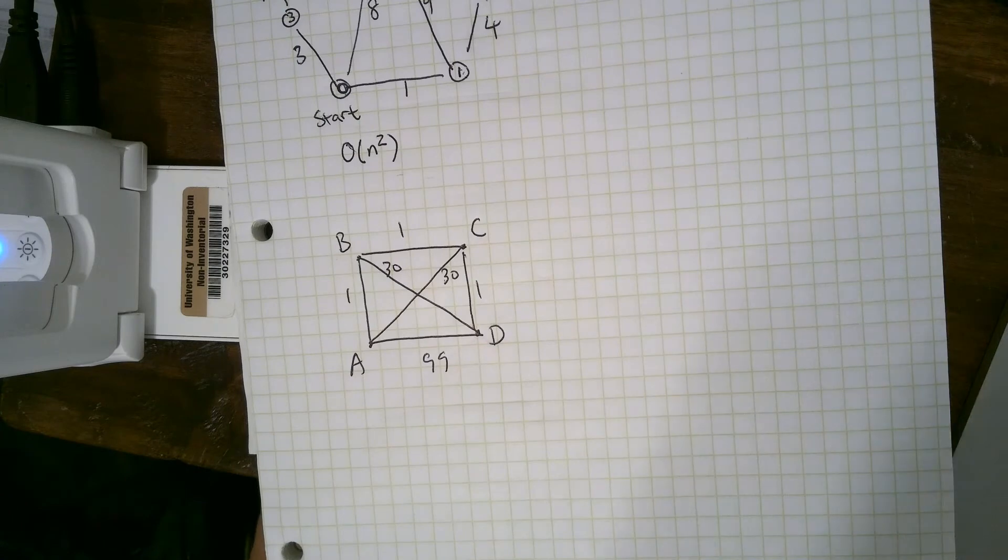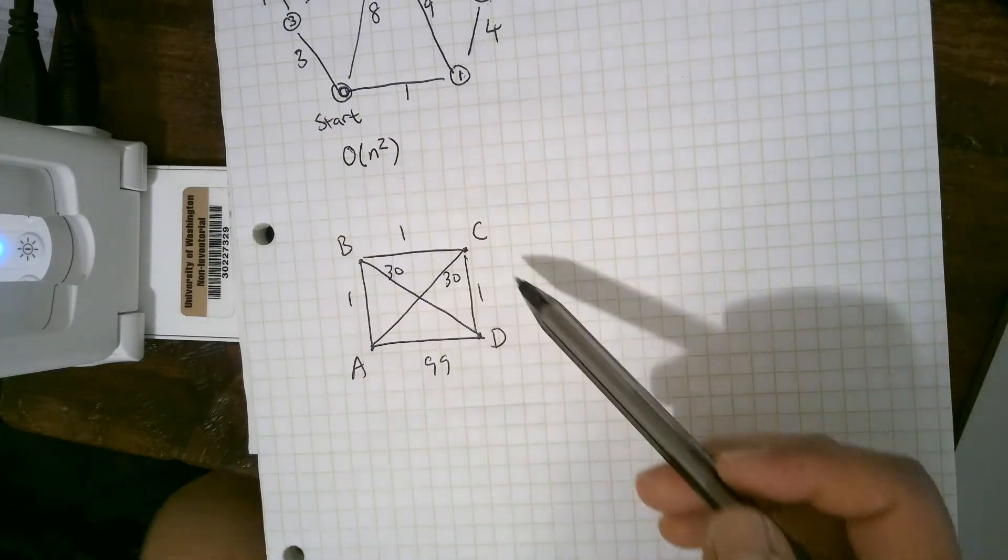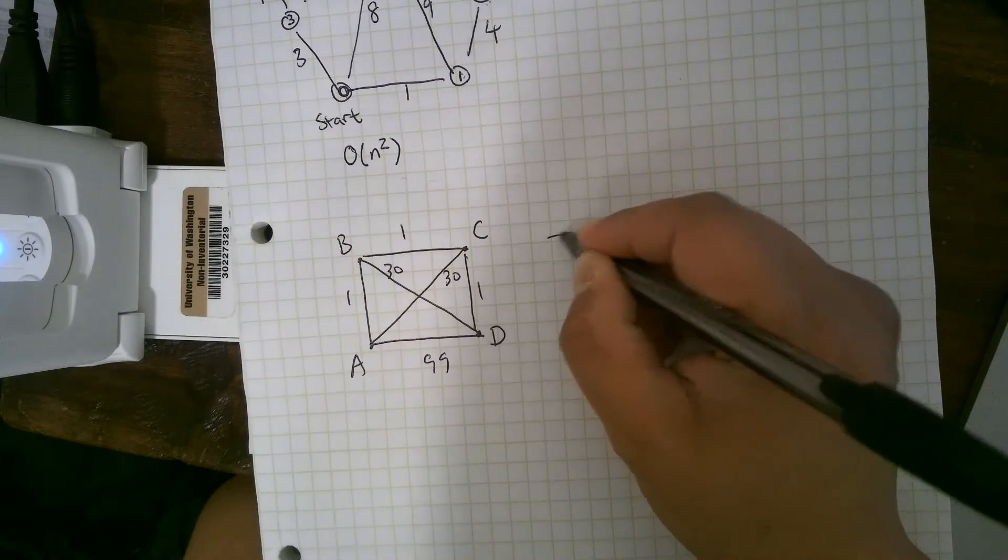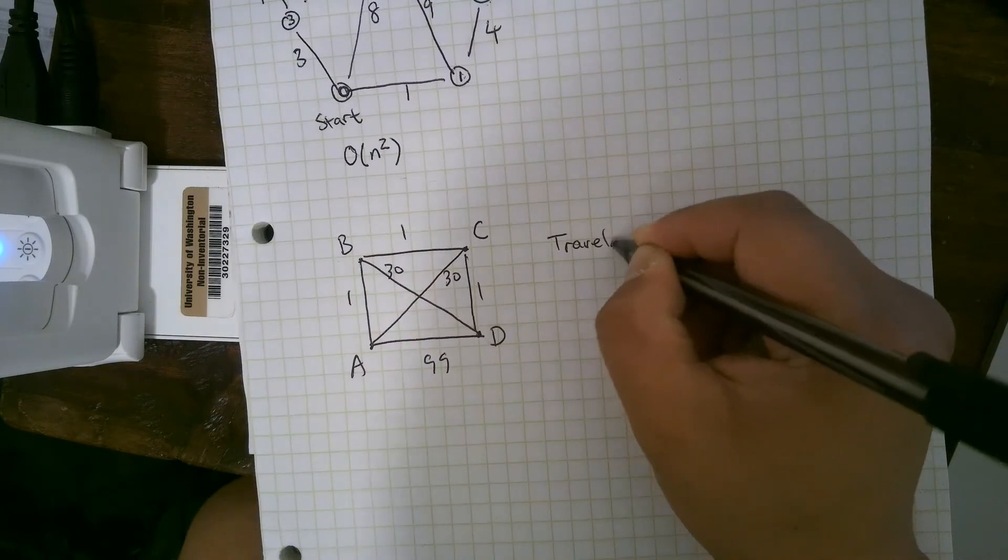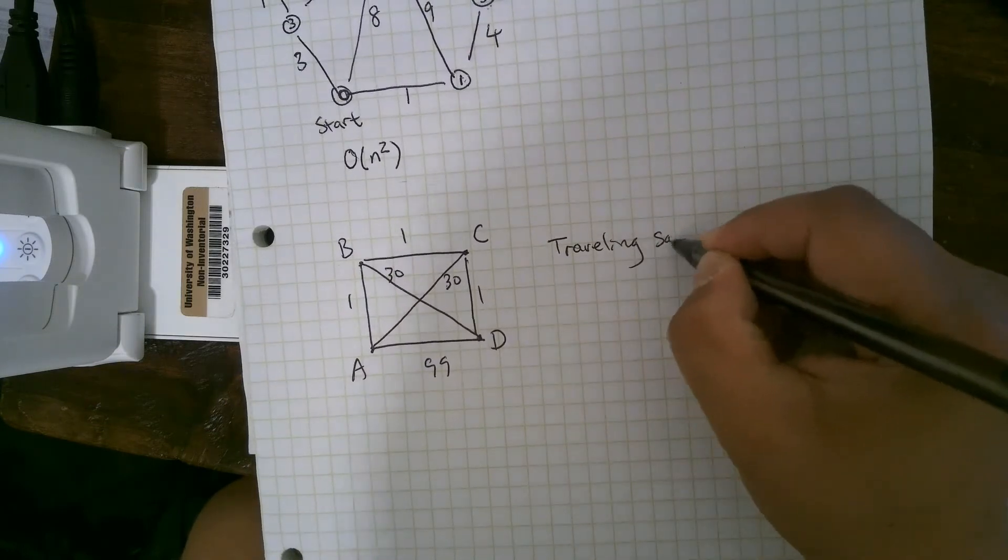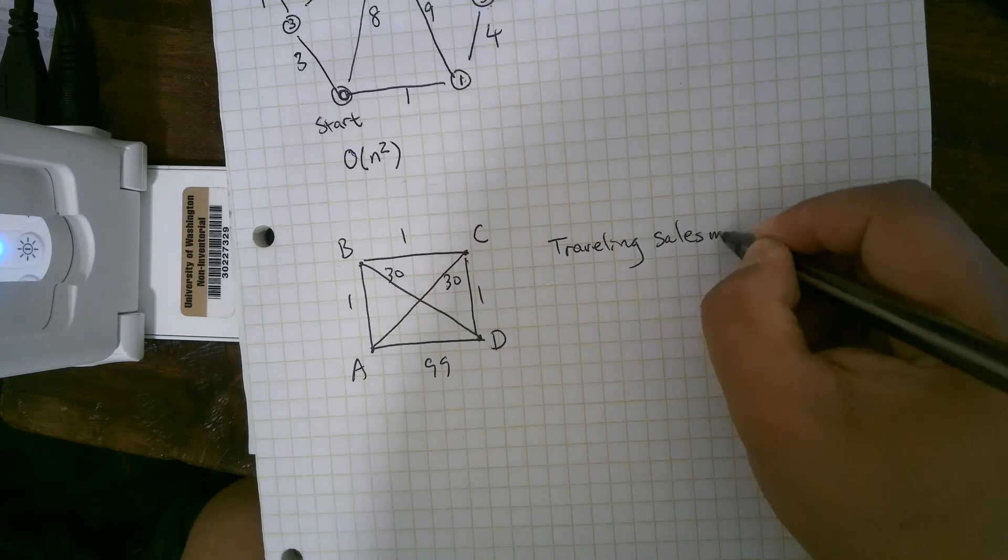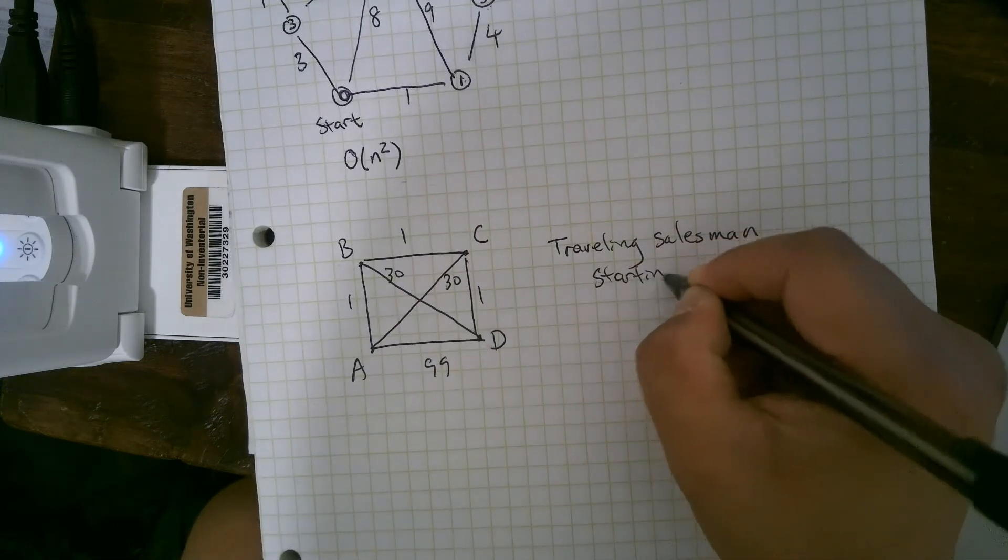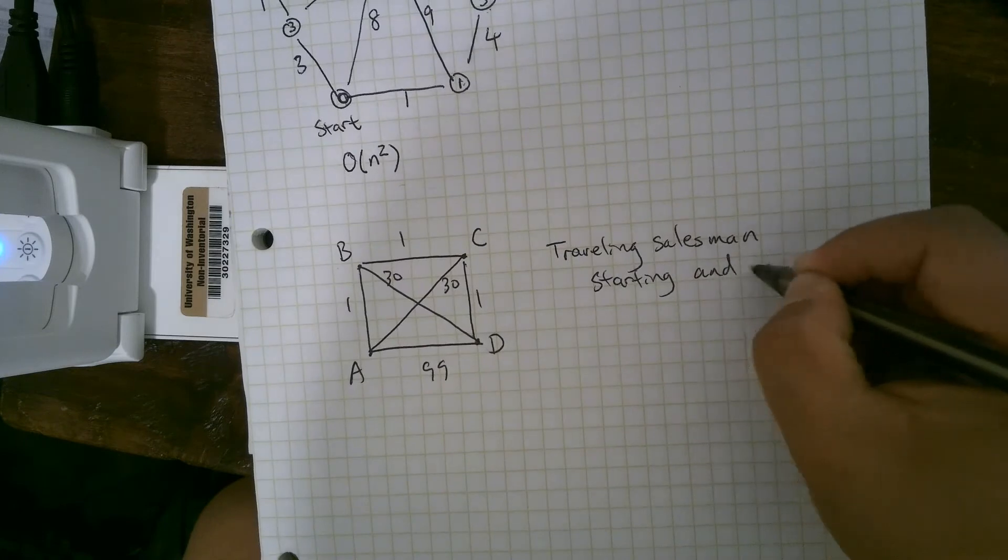Traveling salesman has this annoying thing where you can't repeat vertices. So for example, if you try Dijkstra's algorithm on this graph, where we wanted to do a traveling salesman starting and ending at A.